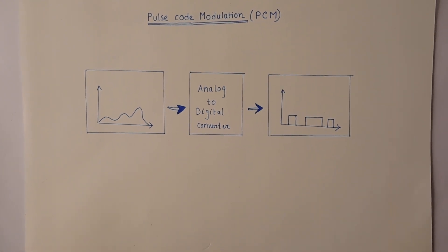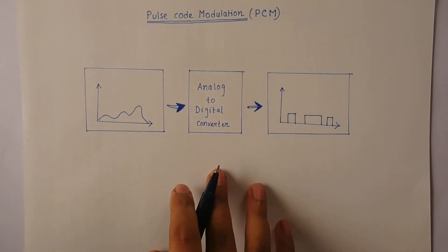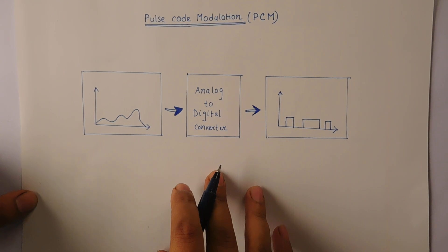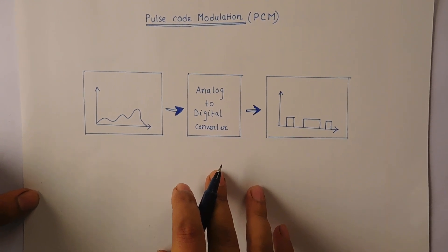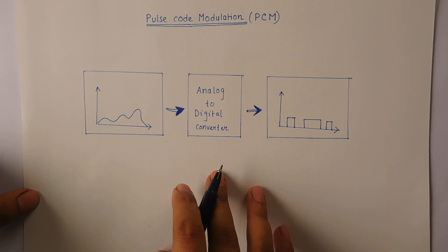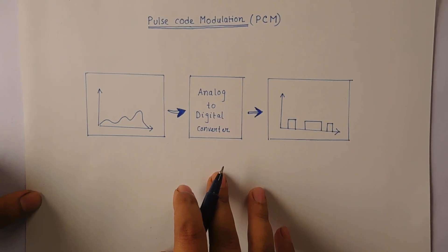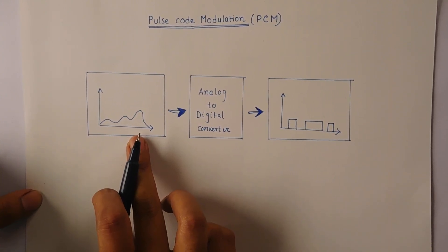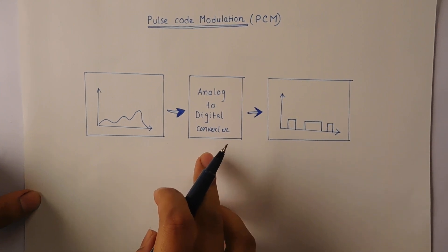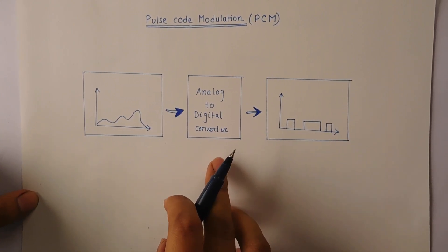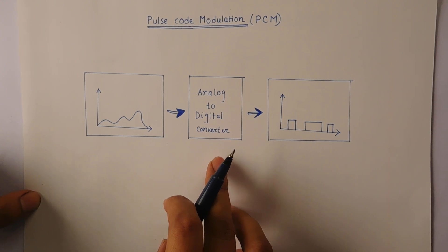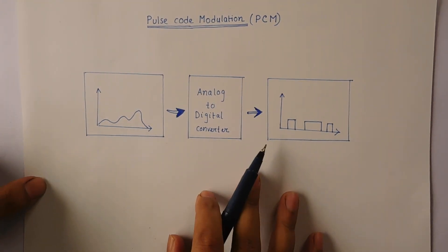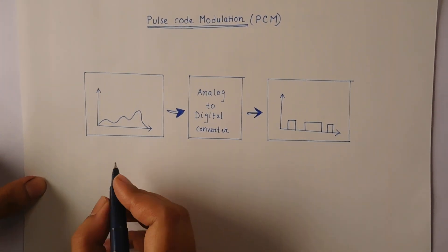Hello everyone, welcome to Computerly. Today we learn about how to convert an analog signal into a digital signal and why we do so. Suppose you make a phone call — your voice is sent over a long distance. Your voice is an analog signal containing an infinite number of values, so we can't send it until it's converted into a digital signal. We use a technique called Pulse Code Modulation to do so. PCM is made up of four separate processes.